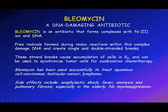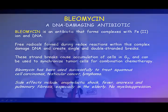Moving on to agents affecting DNA in G2: bleomycin is a DNA-damaging antibiotic that forms complexes with iron and DNA, generating free radicals that create single and double-stranded breaks. These accumulate in cells in G2 and can be used to synchronize tumor cells for combination chemotherapy. It's been used to treat squamous cell carcinomas, testicular cancer, lymphomas, and some leukemias. Side effects include anaphylactic shock, fever, anorexia, and a dreaded pulmonary fibrosis that affects surfactant in the lung and produces something resembling ARDS. High oxygen tensions must be avoided in treated patients.